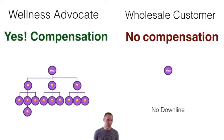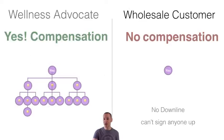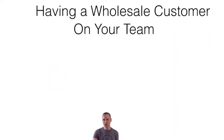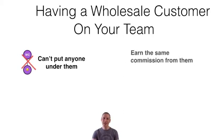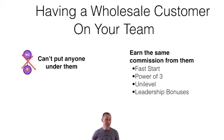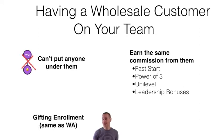Sometimes people just don't want to get involved — you don't have to push them. Make sure they understand that enrolling is an option. Having a wholesale customer on your team means you can't put anybody under them, and you'll know this because they're green in the graphical tree. You get the same commission — all the commission things act exactly the same, except the wholesale customer doesn't get any commission. You can change their enrollment status.